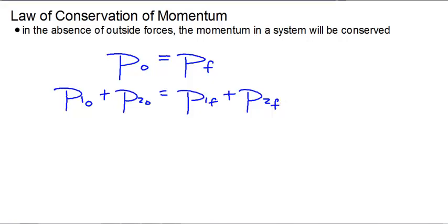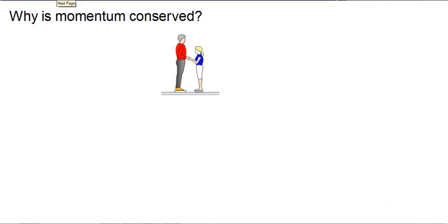So why is momentum conserved? That's the real question we need to address. Here's a classic momentum example. You have two people. Notice that they are wearing ice skates. That's very important to notice. They're on a nearly frictionless surface, the best one we can come up with in our everyday life. And they're going to stand in front of each other and push apart on one another.